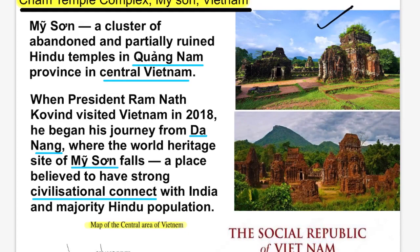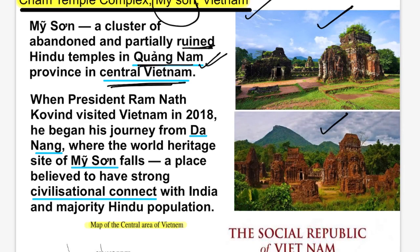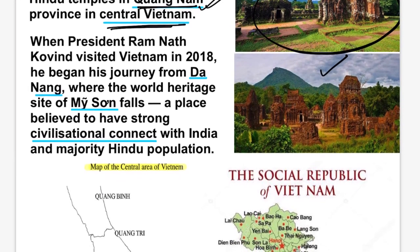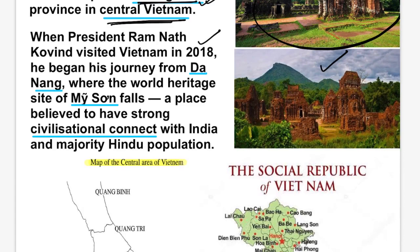The Cham Temple Complex is located in the My Son area in central Vietnam. My Son is a cluster of abandoned and partially ruined Hindu temples in Quang Nam province in central Vietnam. When President Ramnath Kovind visited Vietnam in 2018, he began his journey from Da Nang, where the world heritage site of My Son is located. This entire Cham Temple Complex is a UNESCO World Heritage Site.